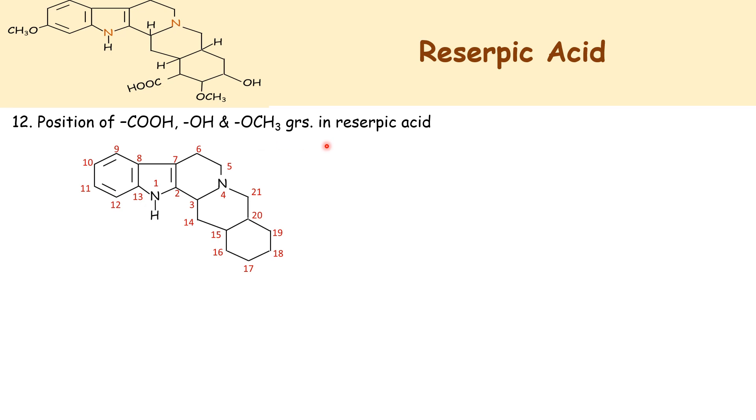Then we see what is the position of COOH, OH, and methoxy groups in reserpic acid. These are the numbering of carbon atoms for that skeleton: 1 through 21.